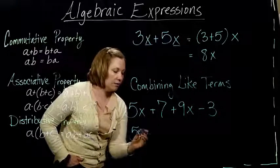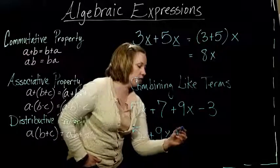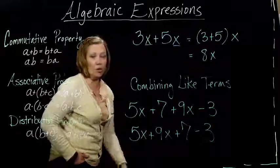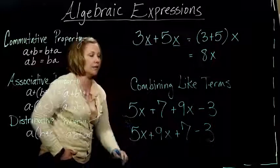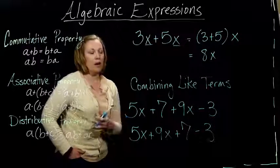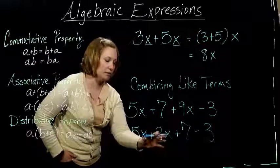It still means the same thing, just in a different order. If these were all numbers, according to these properties, we should still get the same answer. So this is the same as before, we've just written it in a way that allows us to do what we want to do. Now we can combine our like terms - the 5x plus the 9x gives me 14x.